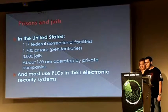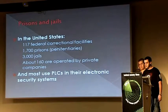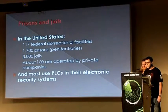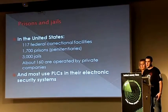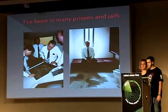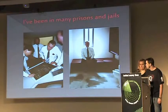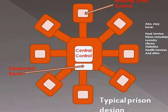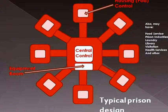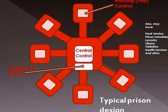In the United States there are about 117 federal correctional facilities, about 1,700 prisons and 3,000 jails, and about 160 of those are operated by private companies. Most will actually use PLCs as well, except for smaller facilities. When we did our tour, the central hub — really the brain of the jail — is in the control room. If you can get into the control room via physical access or electronic access from the outside, this is the type of work that we can do.